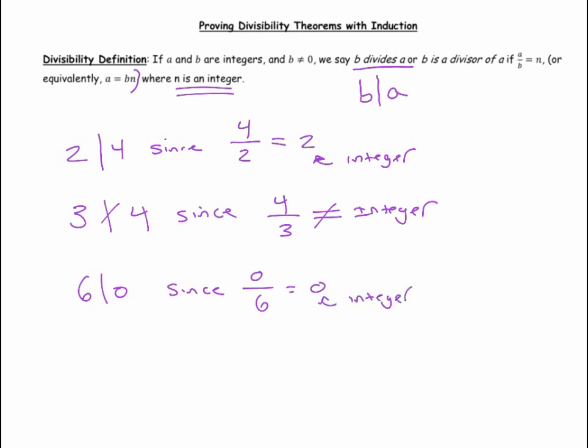Therefore, you can see that A, as long as A is not 0, A divides 0, since 0 divided by A will always be 0 for all natural numbers.